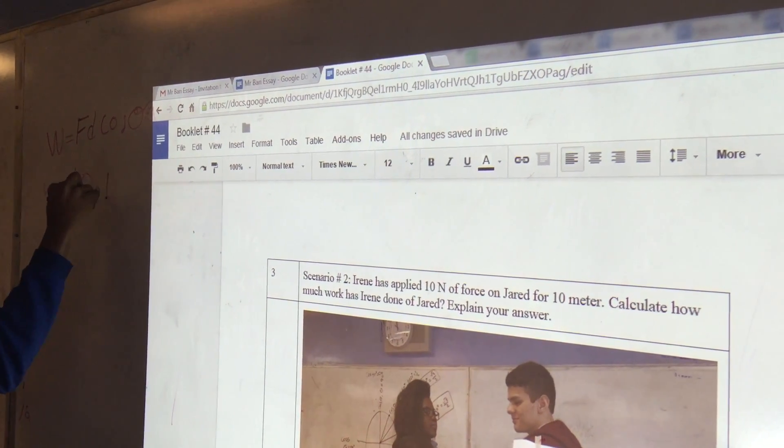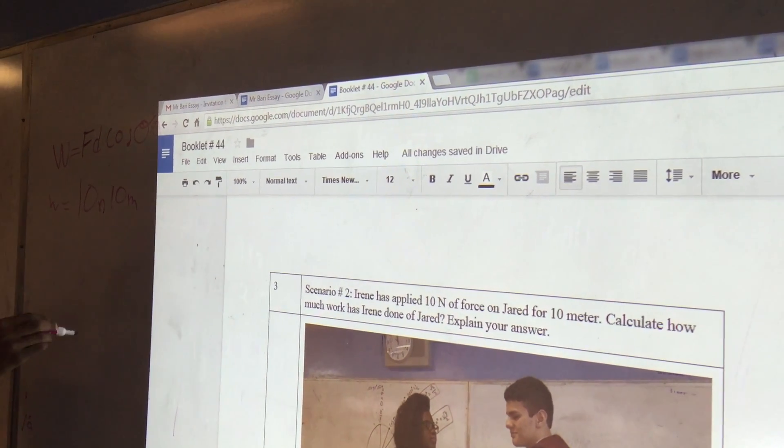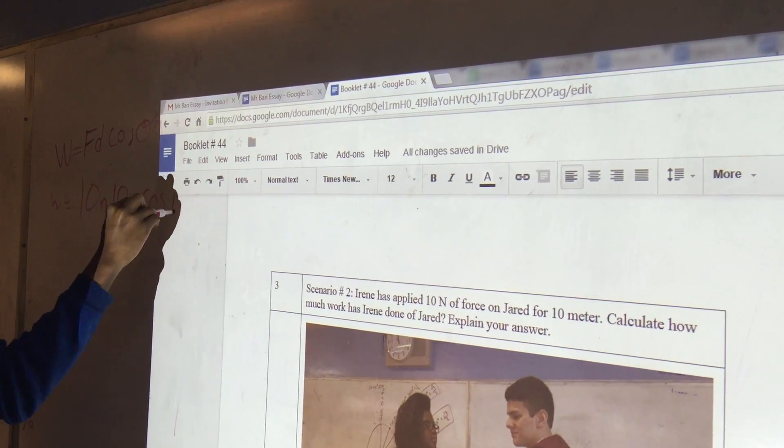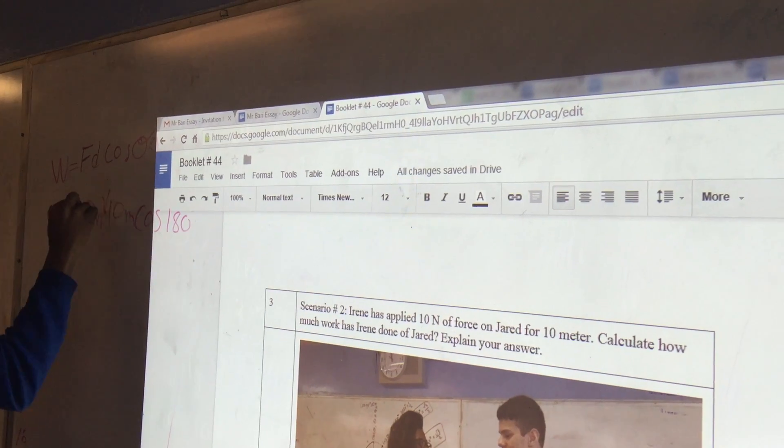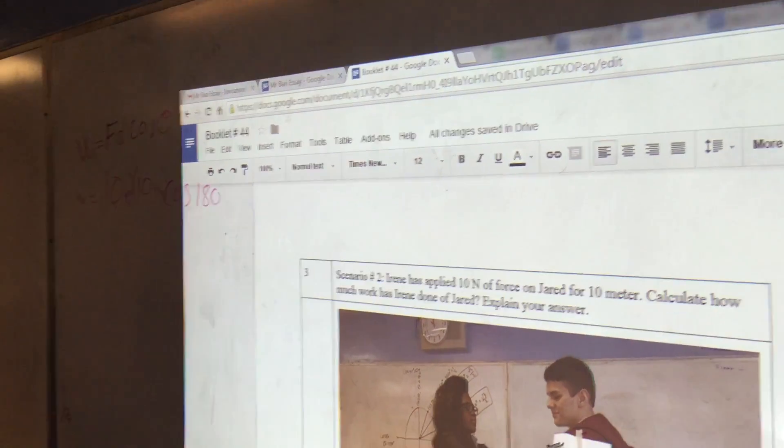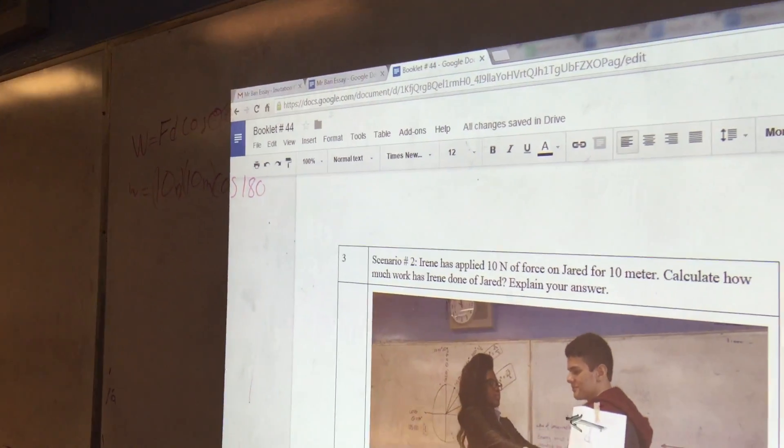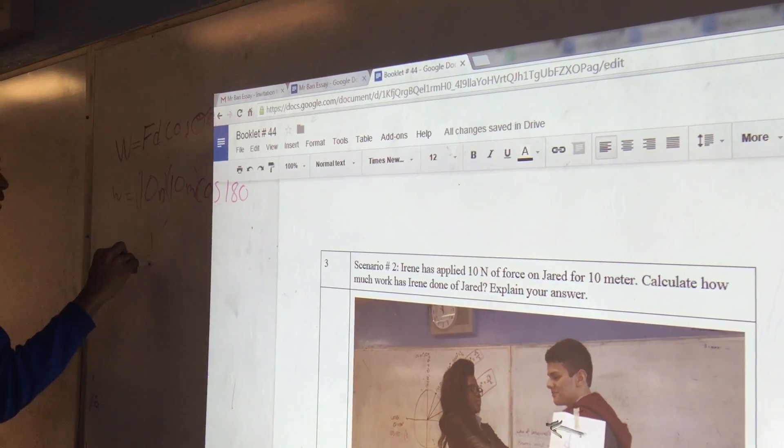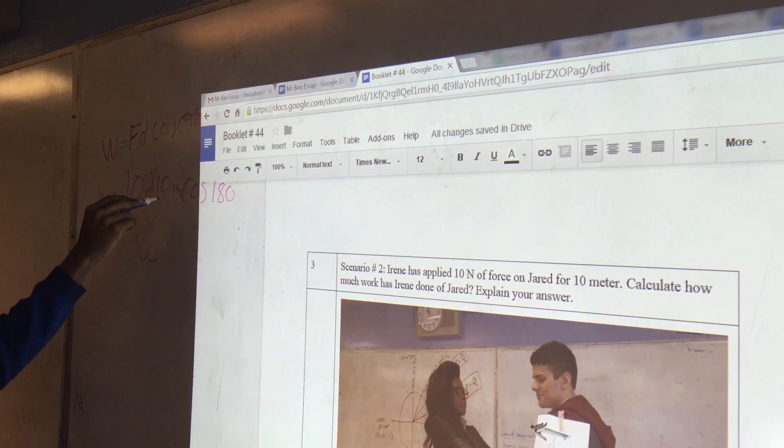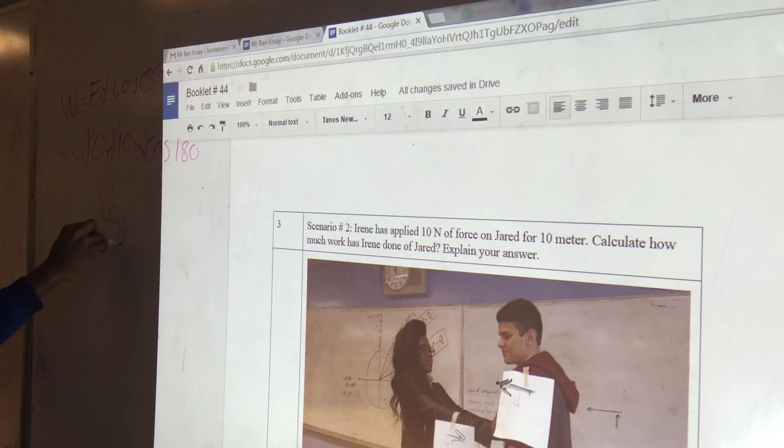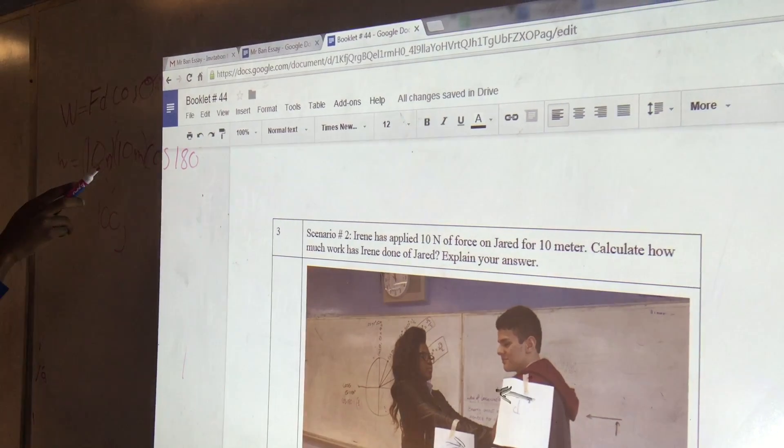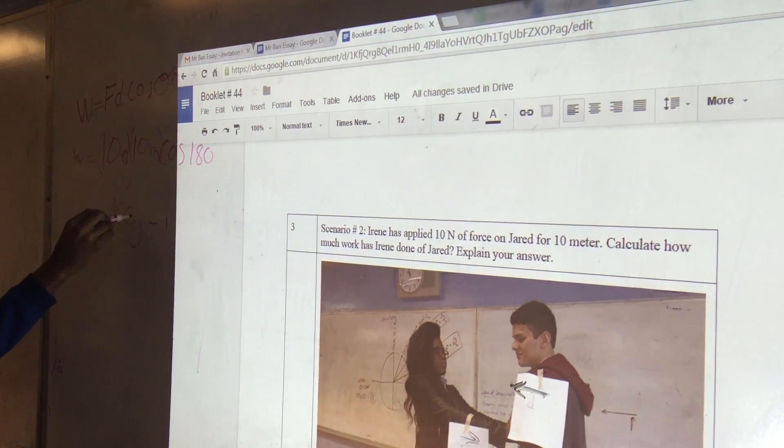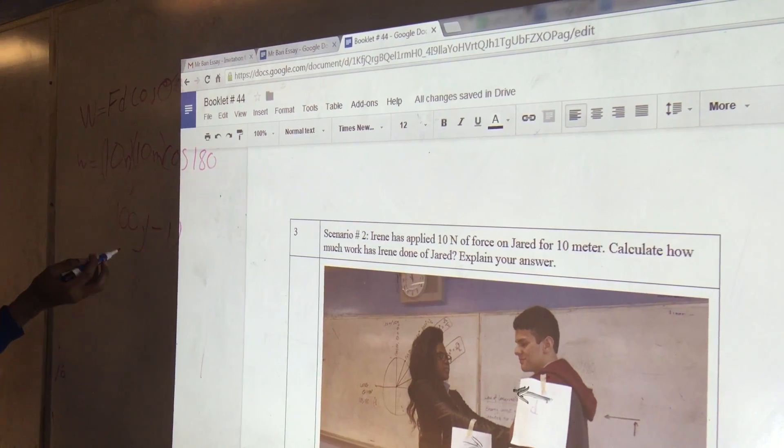So when we simplify like regular algebra, 10 times 10 is 100. Newtons times displacement would be joules. And cosine 180 is negative 1, so you get negative 1 times 100 joules and it becomes negative 100 joules. That's how much work she did. So W equals negative 100 joules.